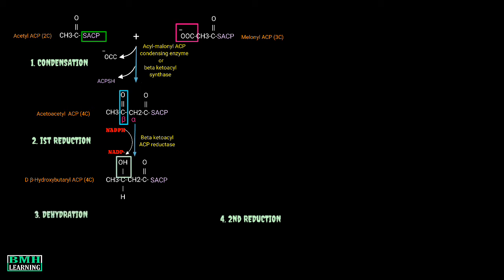Then we have the third dehydration reaction. So that means we are going to lose water in this step, and the product we are getting is named as crotonyl-ACP. The enzyme involved in this step is beta-hydroxyacyl-ACP dehydratase.